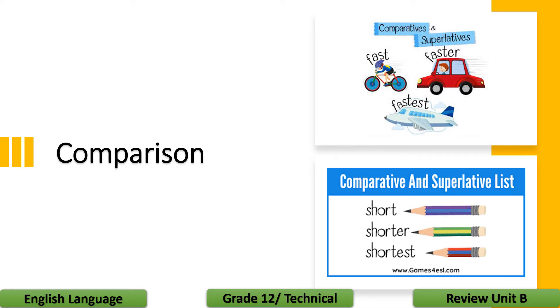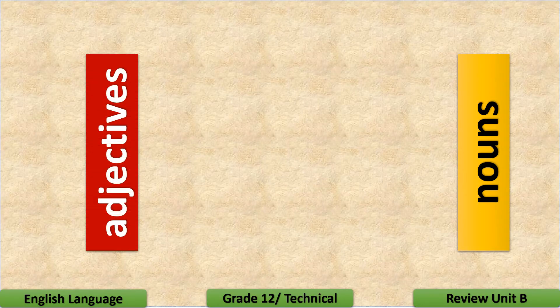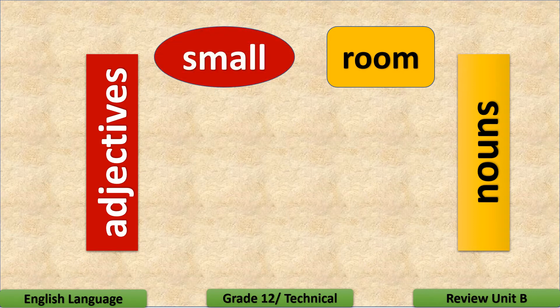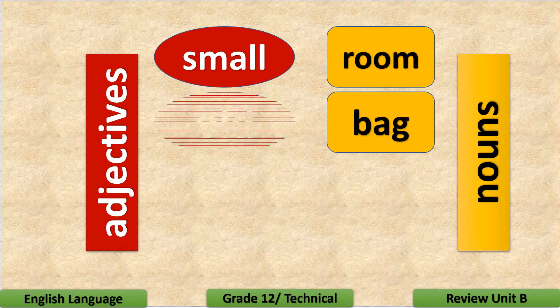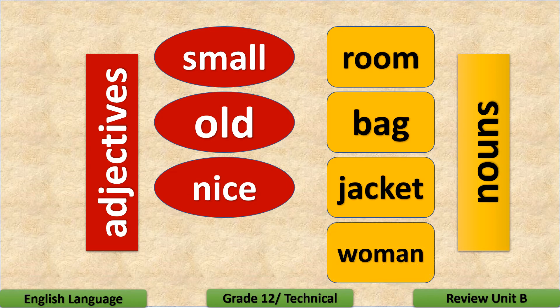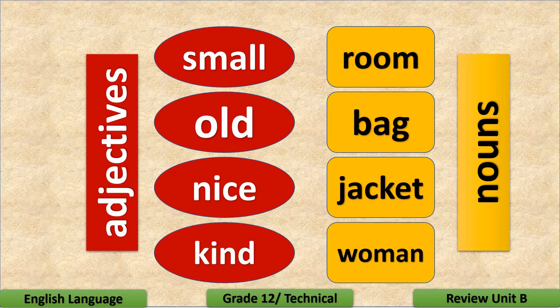Dear students, let's now move to the second objective in our lesson for today, which is comparison. We need adjectives or adverbs to make comparison. Let's have a look at the following examples. We have nouns to the right and adjectives to the left. For example: small room, old bag, nice jacket, and kind woman.